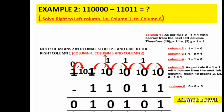Here is our second example. We have to calculate 1100000 minus 11011. What would be the result? On the screen I have written the sum for workout: 1100000 minus 11011. Now let us do the calculation.